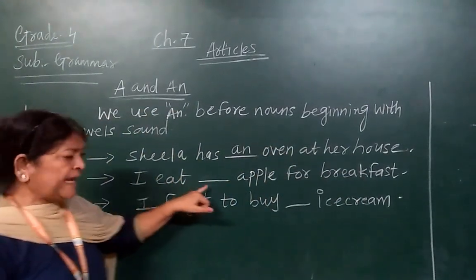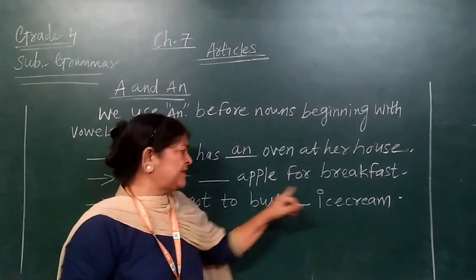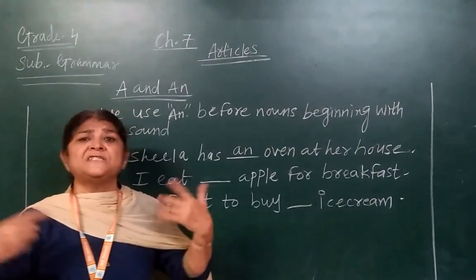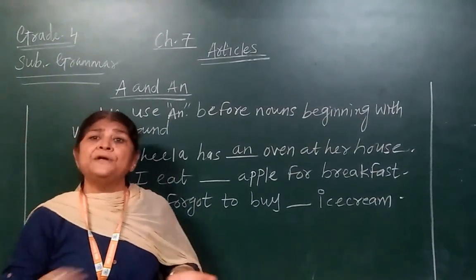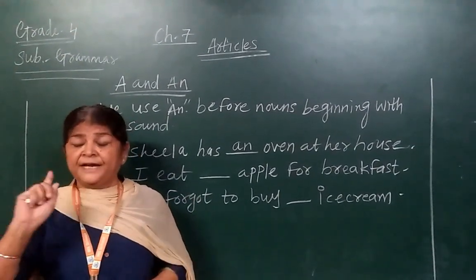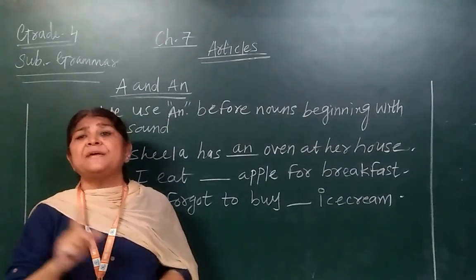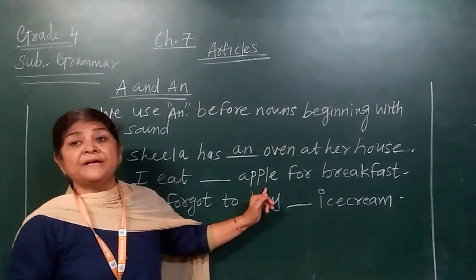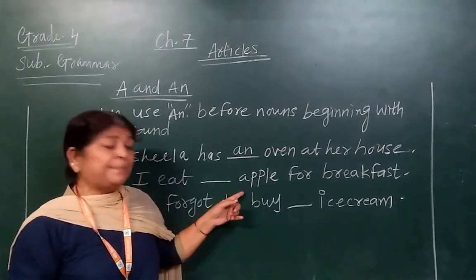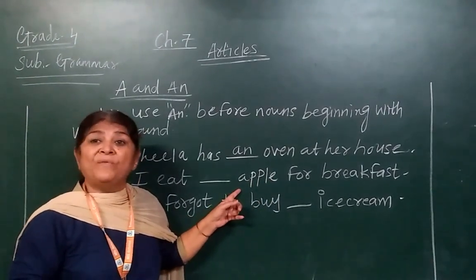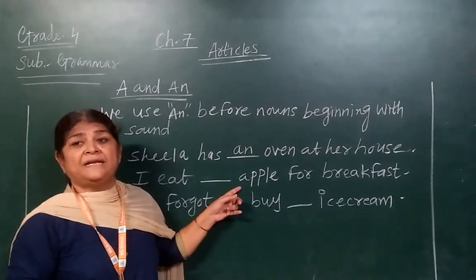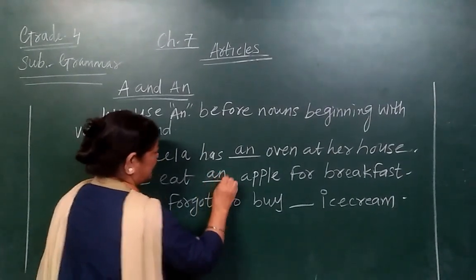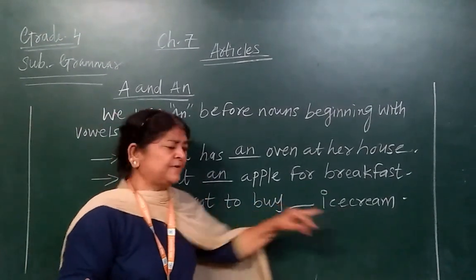Number two: I ate an apple for breakfast. Apple is a thing — a noun. In the word 'apple,' A is a vowel, so we write An — I ate an apple for breakfast.